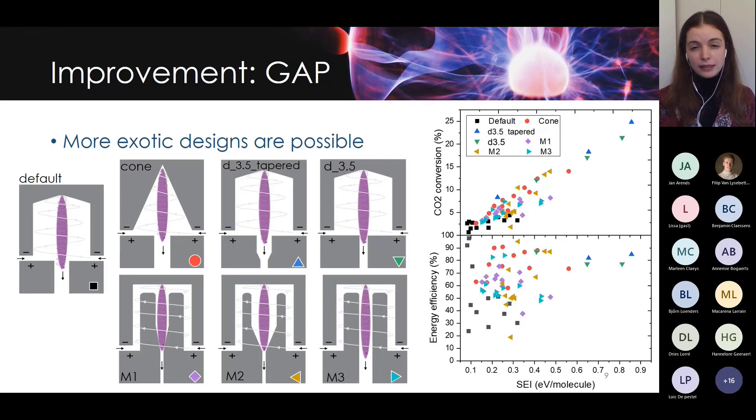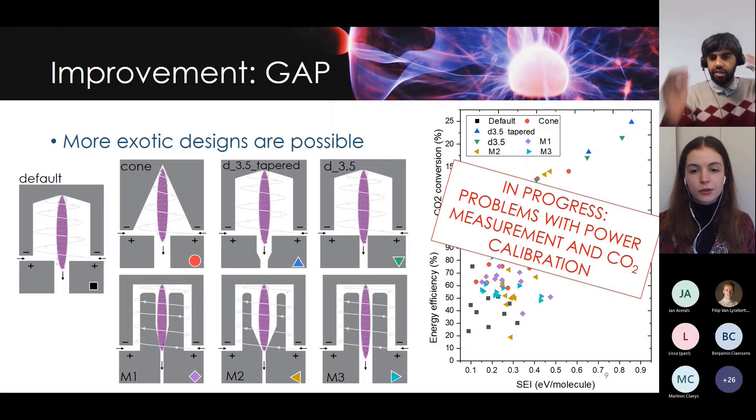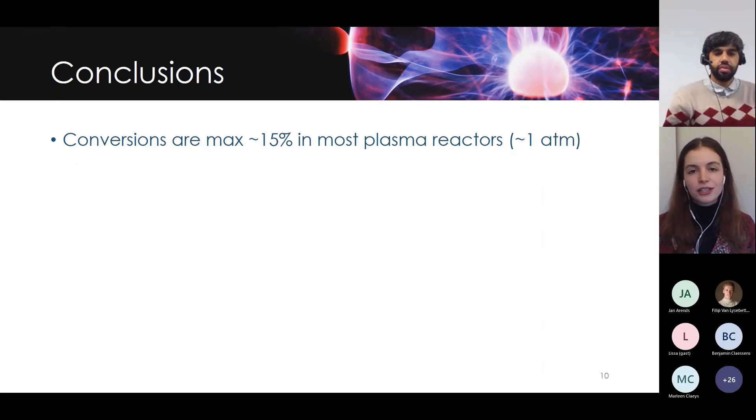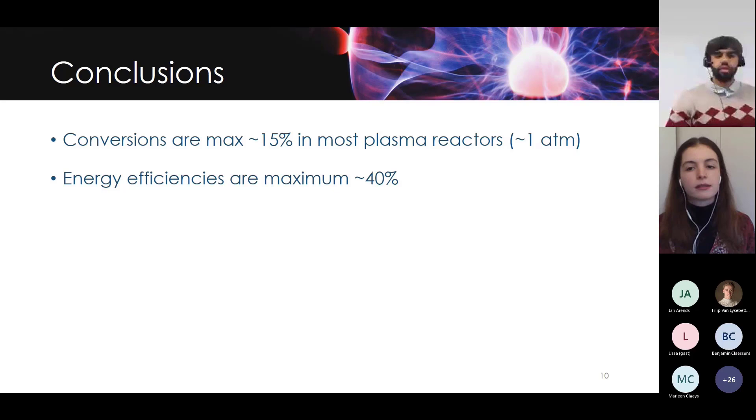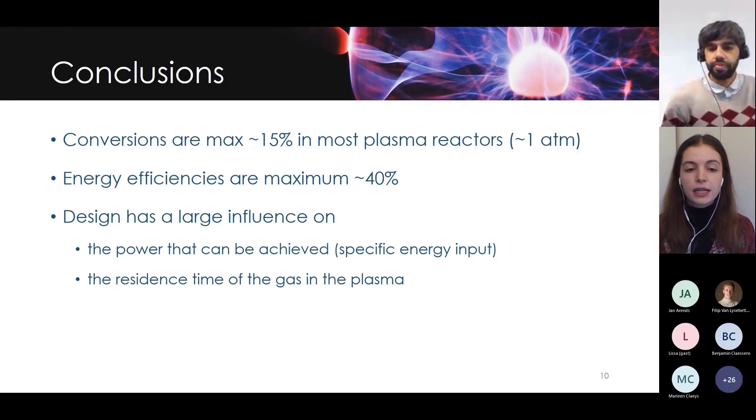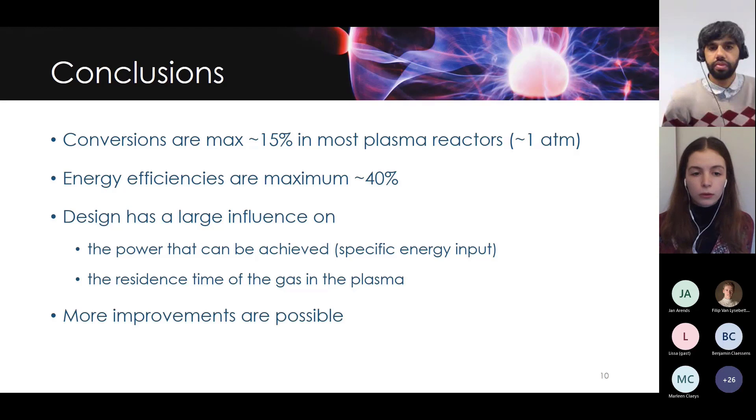Now, keep in mind these results are only relative compared to each other. This is still work in progress. We later discovered some issues with both the power measurements and with the calibration of the CO2. But still, in my next experiment I expect that these relative results will hold when I do the full experiment. What can we conclude? We see that actually the conversions in atmospheric pressure reactors is all about maximum 15 percent for energy efficiencies of about 40 percent in the maximum. But I also saw that the design really has a large influence on both the power that can be achieved and on the residence time of the gas in the plasma. So clearly, more improvements are still possible.